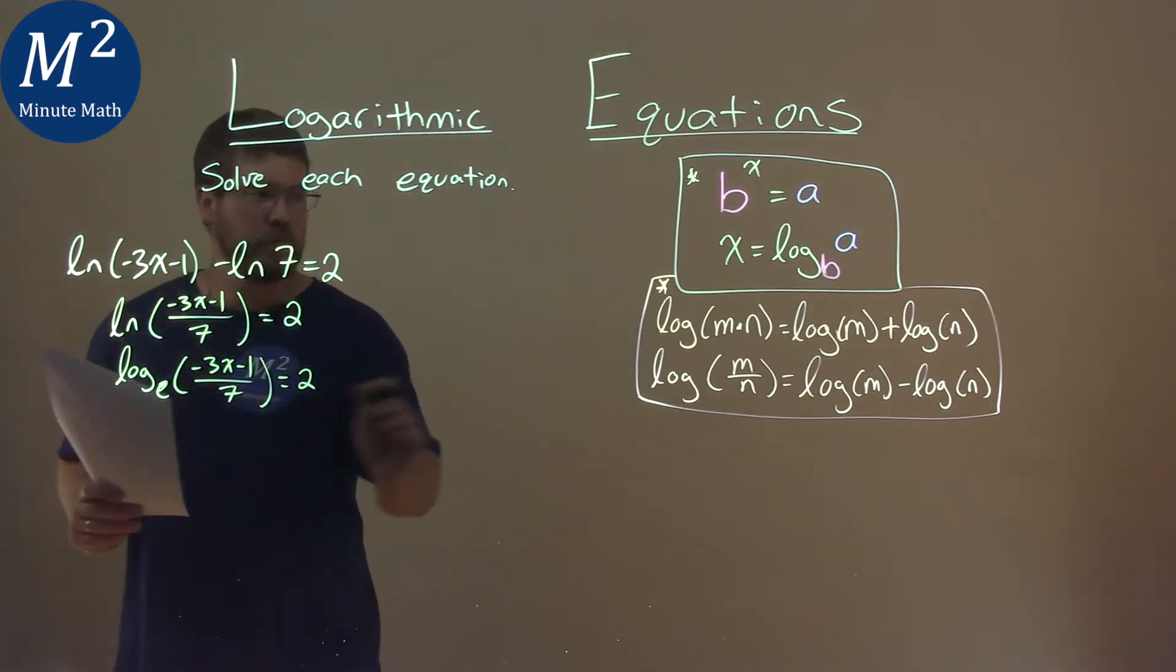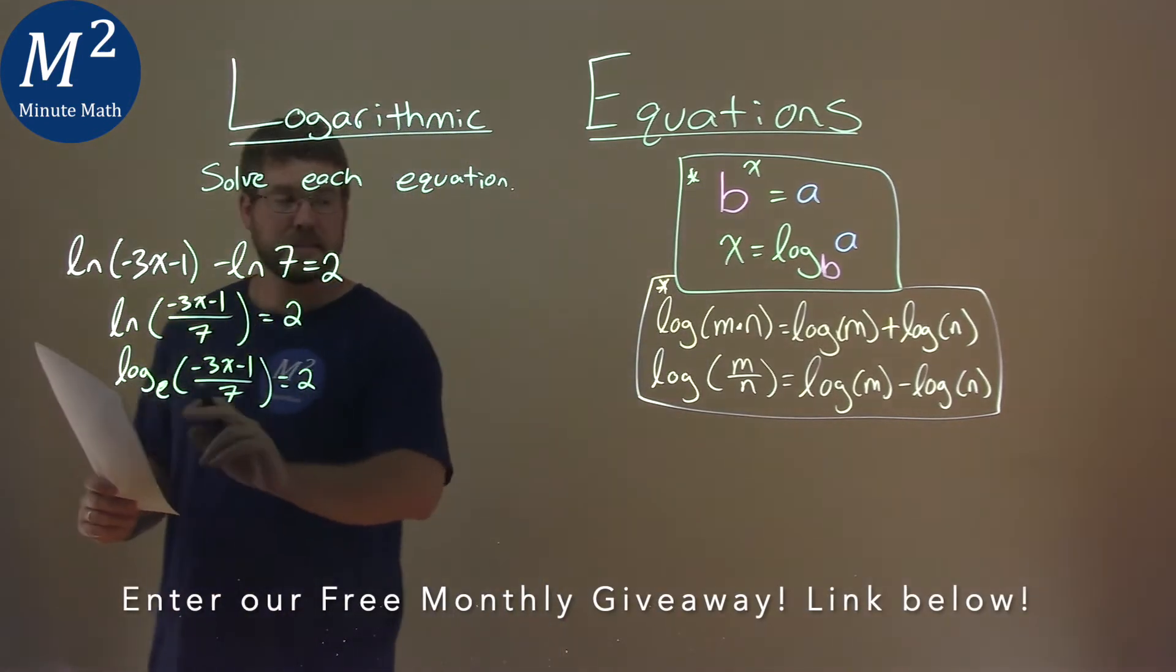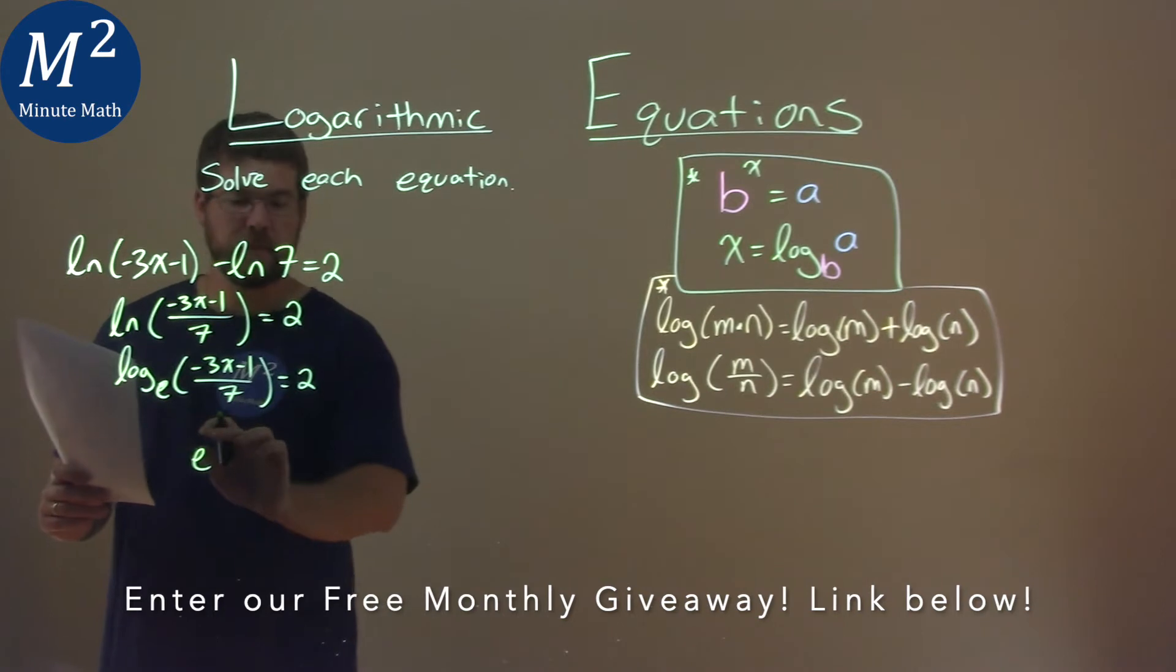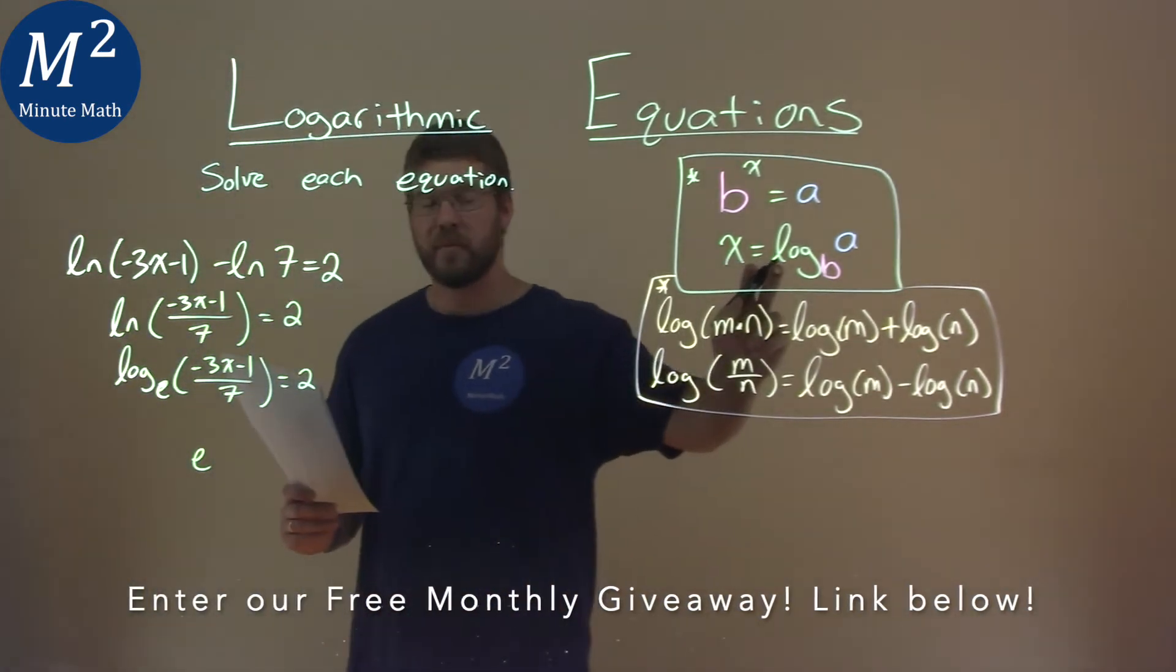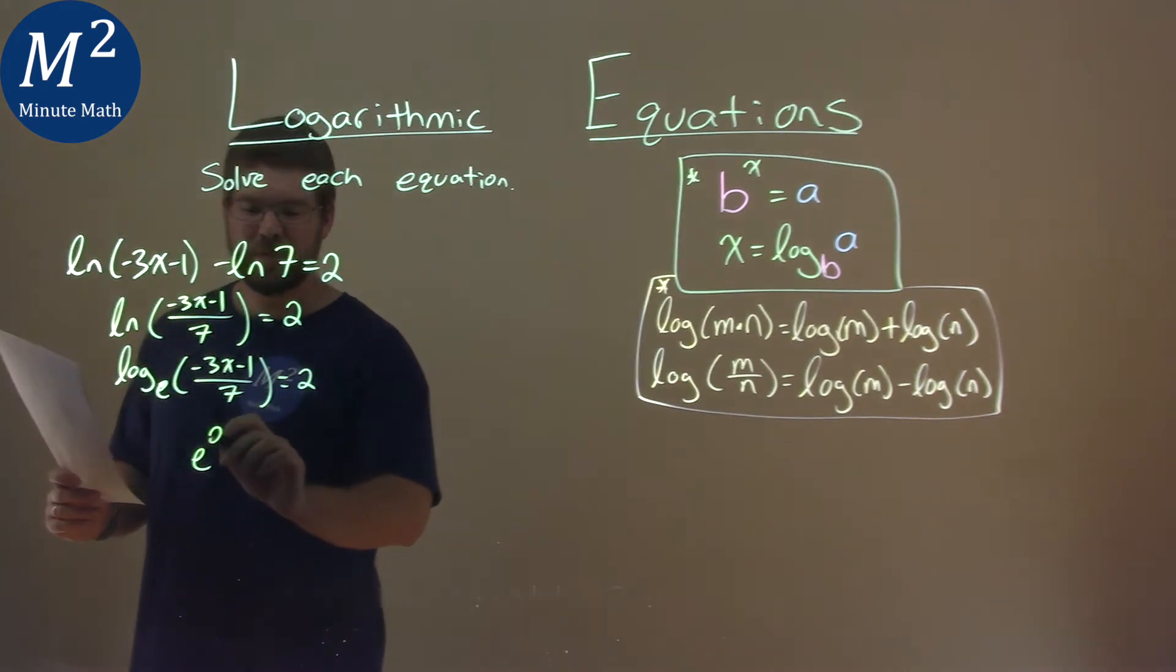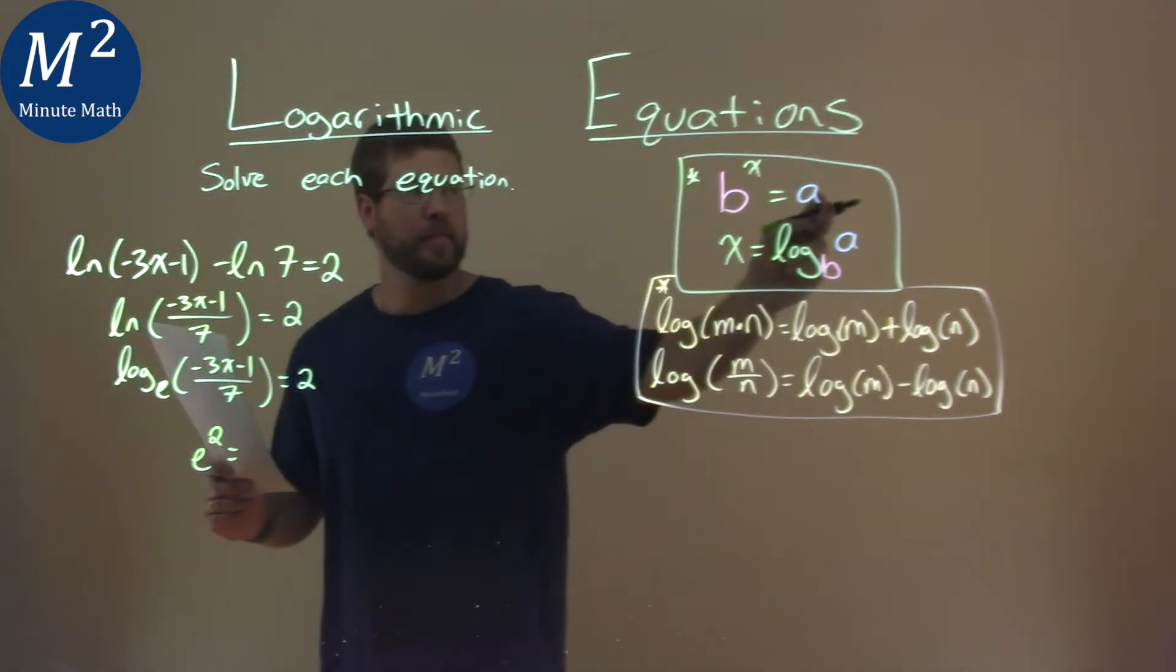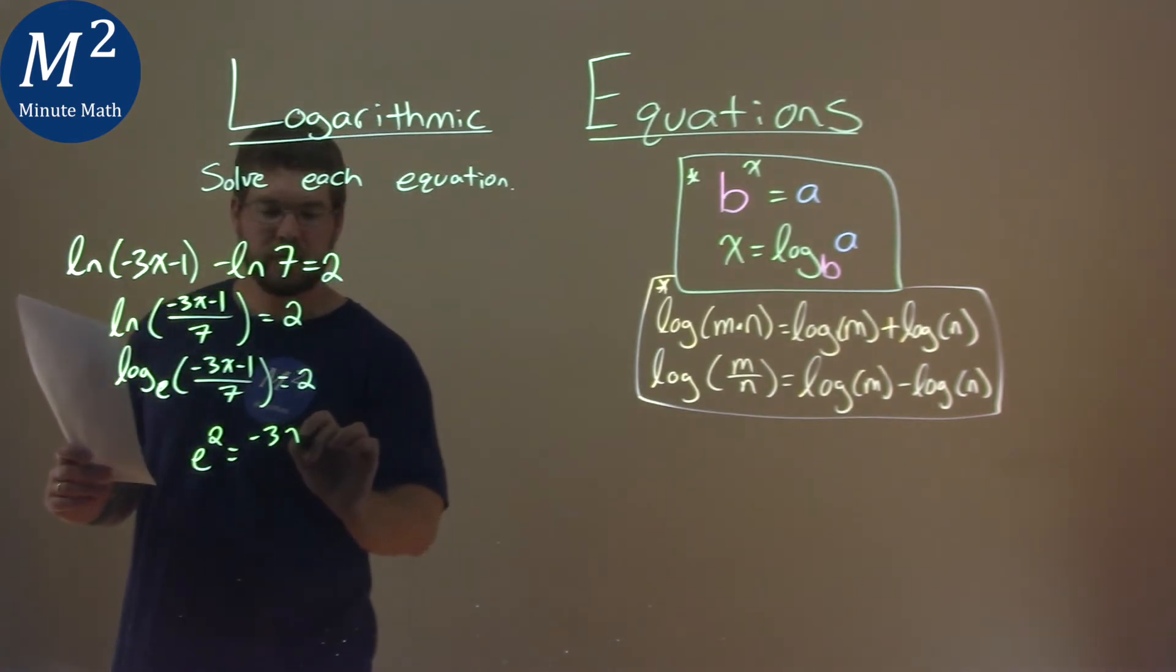So with that, we use our formula here to convert that to the top part. Our base is e here, the b value, and we're raising it to what our logarithm is equal to, which is 2. And that's going to be equal to what's inside of the logarithm, the a value: negative 3x minus 1 over 7.